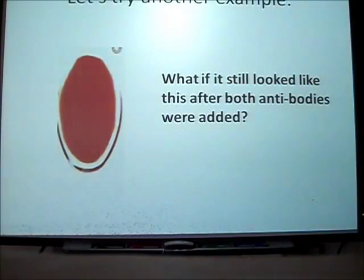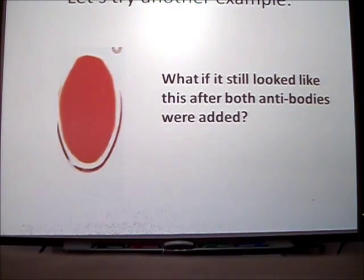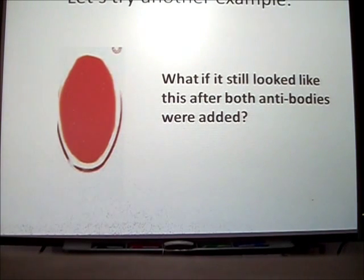So what would it look like if both wells looked absolutely the same? That means neither anti-B found its protein, and anti-A did not find its protein. So if neither protein is found, that means this has to be O type blood.